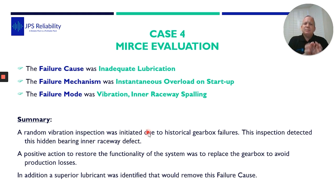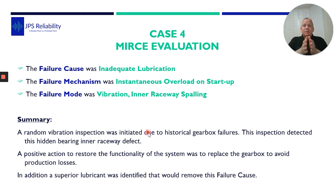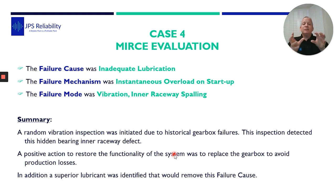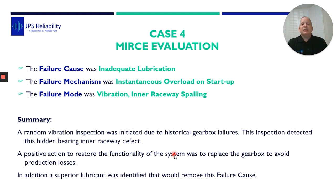The inspection was effectively random in the sense that we were doing a trial to prove they could achieve a higher PF curve and plan and schedule maintenance. We found a hidden defect — one that they would only normally find once the inner race had spalled so much that significant heat was generated in the gearbox, picked up only on the operator's temperature checks.